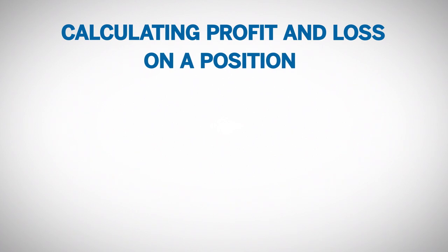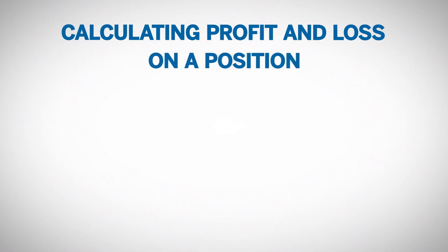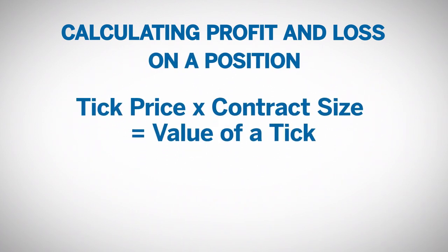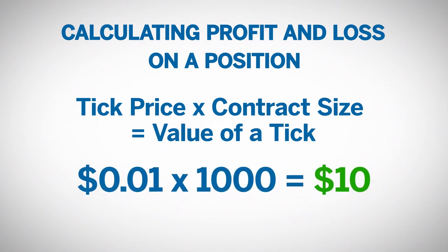The dollar value of a one-tick move is calculated by multiplying the tick size by the size of the contract. For example, the dollar value of a one-tick move in WTI is one cent times 1,000 barrels of oil, which equals $10.